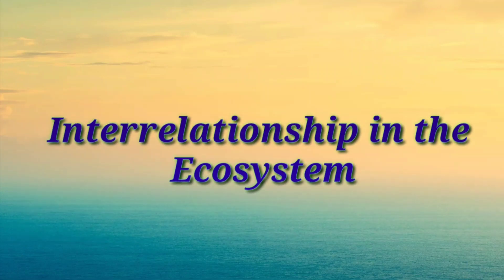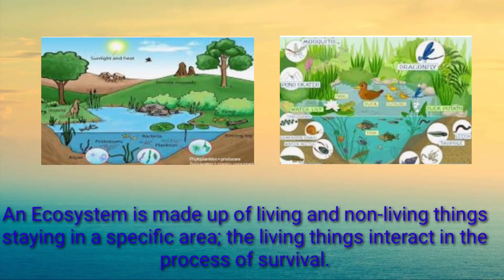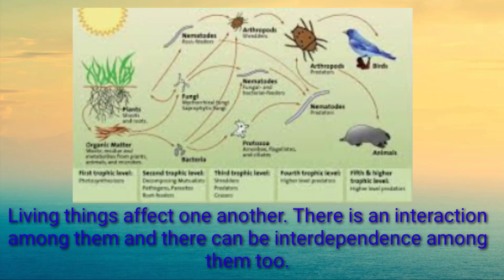Interrelationship in the Ecosystem. An ecosystem is made up of living and non-living things staying in a specific area. The living things interact in the process of survival. Living things affect one another — there is an interaction among them and there can be interdependence among them too.